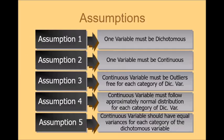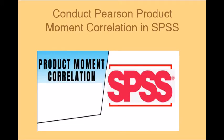Once you have assured that your data meets these five assumptions, you can simply proceed to conduct point biserial correlation analysis. And what you need to do for this? You just need to conduct a Pearson product moment correlation analysis in SPSS in this way.